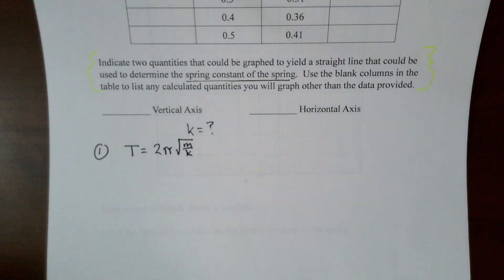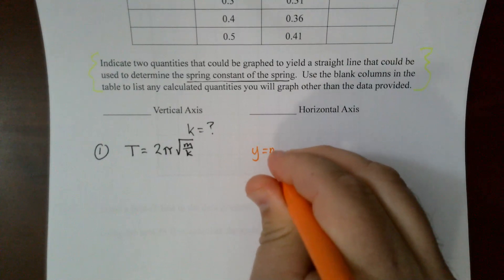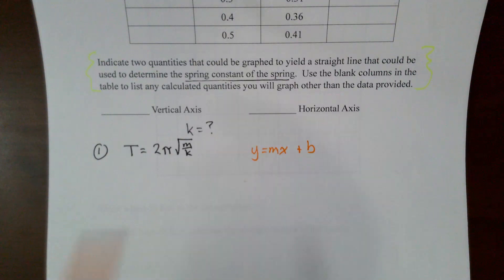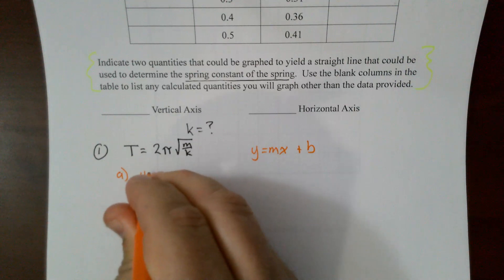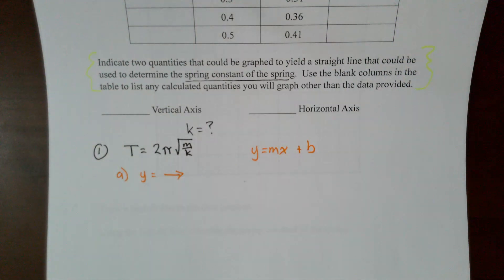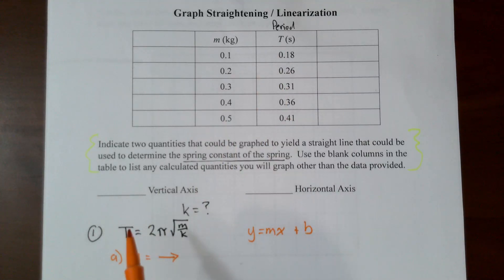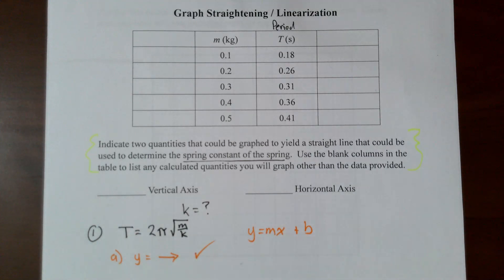The question now is: how do I get this equation to look like y = mx + b? From algebra you know that's the equation for a straight line. Step one is to get one variable on one side and everything else on the other side. T is already on the left side, so step one is already complete.